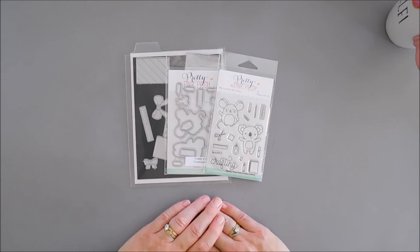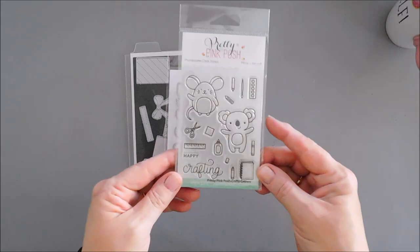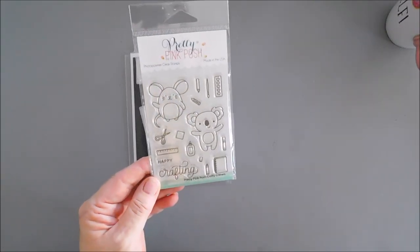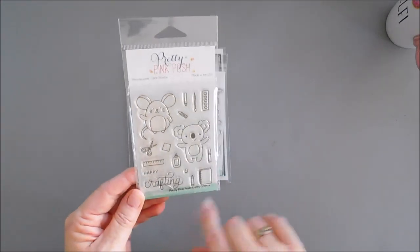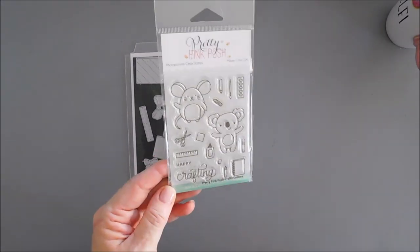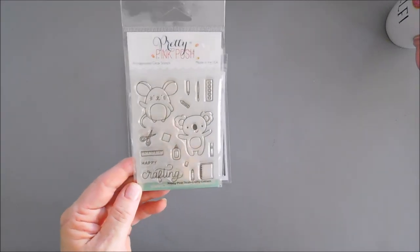We are going to create a card for Pretty Pink Posh today. We're going to be using the Crafty Critters stamp set. It has a little mouse and a little koala, which I'll probably during the video call it a panda because that's just what I do. There is a sentiment in here that says happy crafting, and then there's also some fun crafty tools.